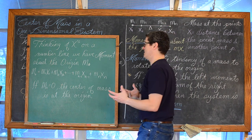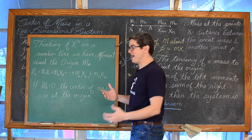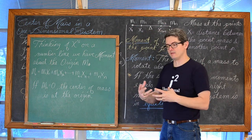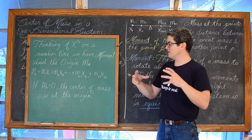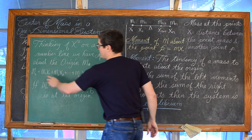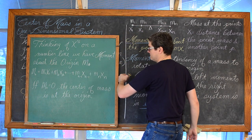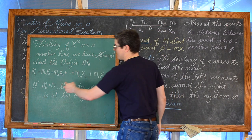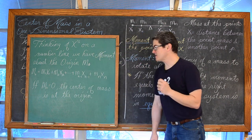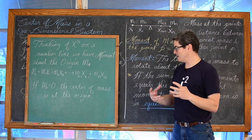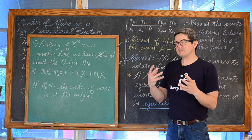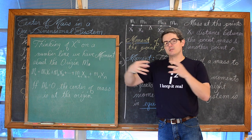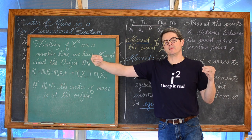All this is basically saying: if you have five masses, then you need to take the product of each of those masses and multiply them by the distance they are from the origin and add all those up. If this sequence of additions adds up to be 0, then the center of mass is at the origin — that one-dimensional system is in equilibrium.